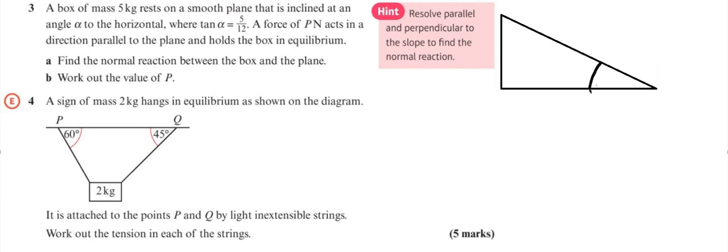It's an incline plane and it has an angle of alpha. We're told that tan alpha equals 5 over 12. We've got something that weighs 5 kilos, so that's 5g, which is a normal reaction to the surface. And there's a force P acting parallel to the horizontal line.